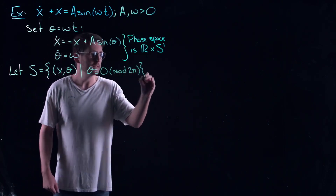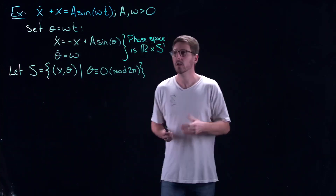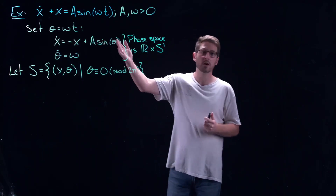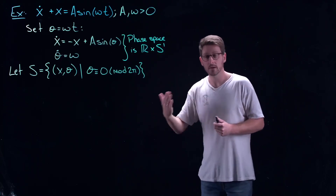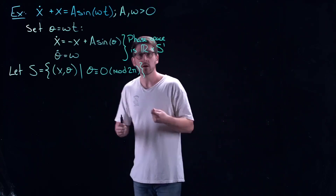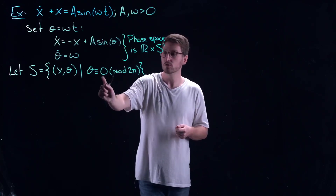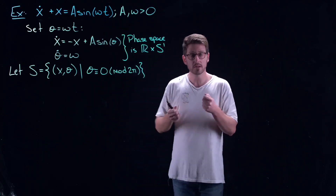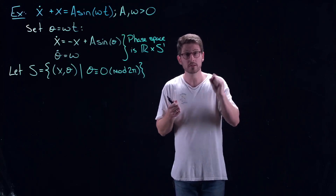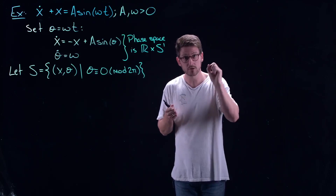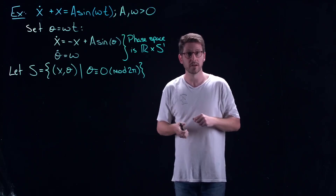Why do we call it a stroboscopic map? This sinusoidal forcing means we're essentially tracking what the system looks like after one full forcing period. You're essentially strobing the system — taking snapshots after every single driving period. This thing has a period of 2π/ω, so it takes T = 2π/ω time units to return to S. These are relatively simple situations that we can handle analytically.